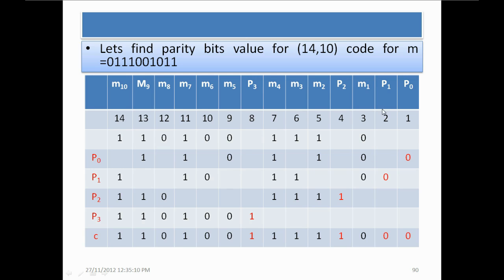For P1, parity starts from position 2. We add positions 2 and 3, skip 4 and 5, add 6 and 7, skip 8 and 9, add 10 and 11, skip 12 and 13, and add 14. Counting the ones again gives 4, which is even, so parity bit P1 is 0.